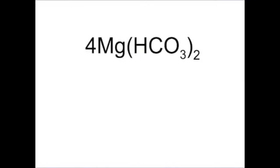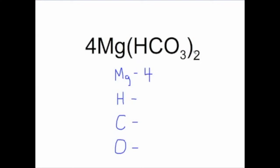Here is a real challenging one: magnesium bicarbonate. We see the chemical formula with a coefficient of four in the front. That tells us there are four magnesium bicarbonate compounds. Let's list the elements: magnesium, hydrogen, carbon, and oxygen. There is one magnesium times four equals four total magnesiums. There is one hydrogen in parentheses, but a two outside means two total hydrogens in magnesium bicarbonate. The coefficient of four means four times two times one is eight total hydrogens. There is one carbon in parentheses, but a two outside means two total carbons in magnesium bicarbonate. The coefficient of four means four times two times one is eight total carbons.